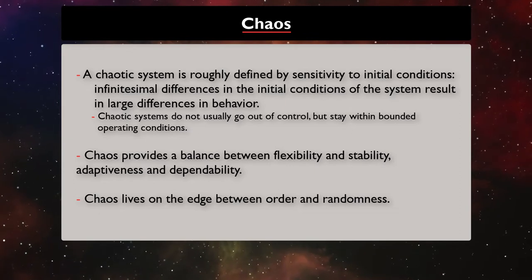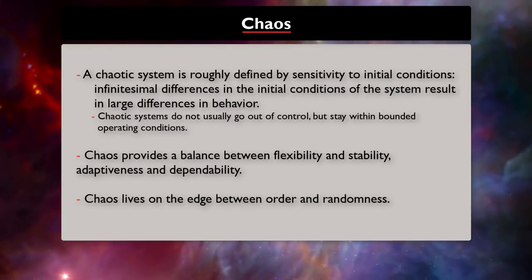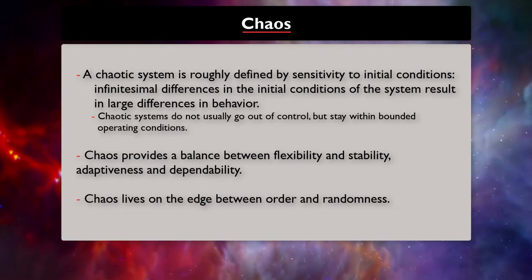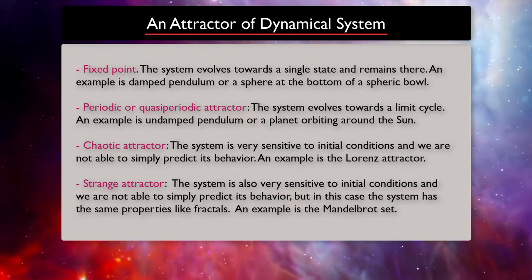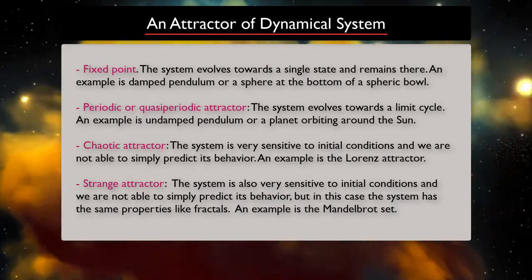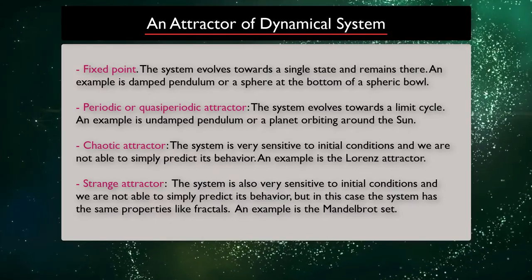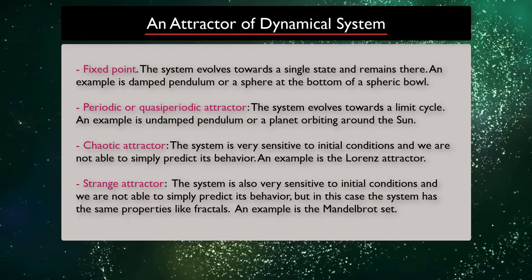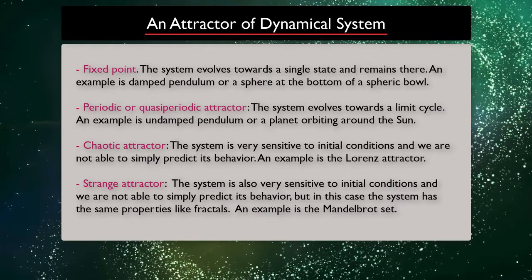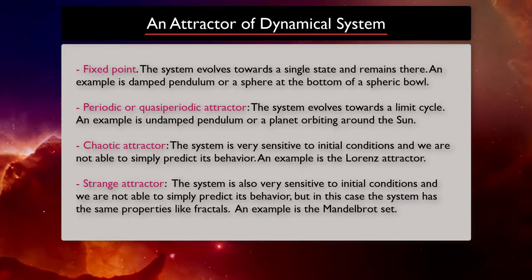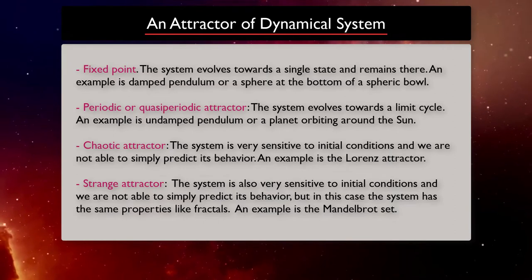What if you do not have equations describing the system and you only observe the output of the system close to its attractors? A dynamical system can have different types of attractors. If the system evolves towards a single state and remains there, we call it a fixed point — an example is a damped pendulum or a ball at the bottom of a bowl. There are periodic attractors when the system evolves towards a limit cycle — an example is an undamped pendulum or a planet orbiting the sun. If the system is very sensitive to initial conditions and we are not able to simply predict its behavior, we call it a chaotic attractor.